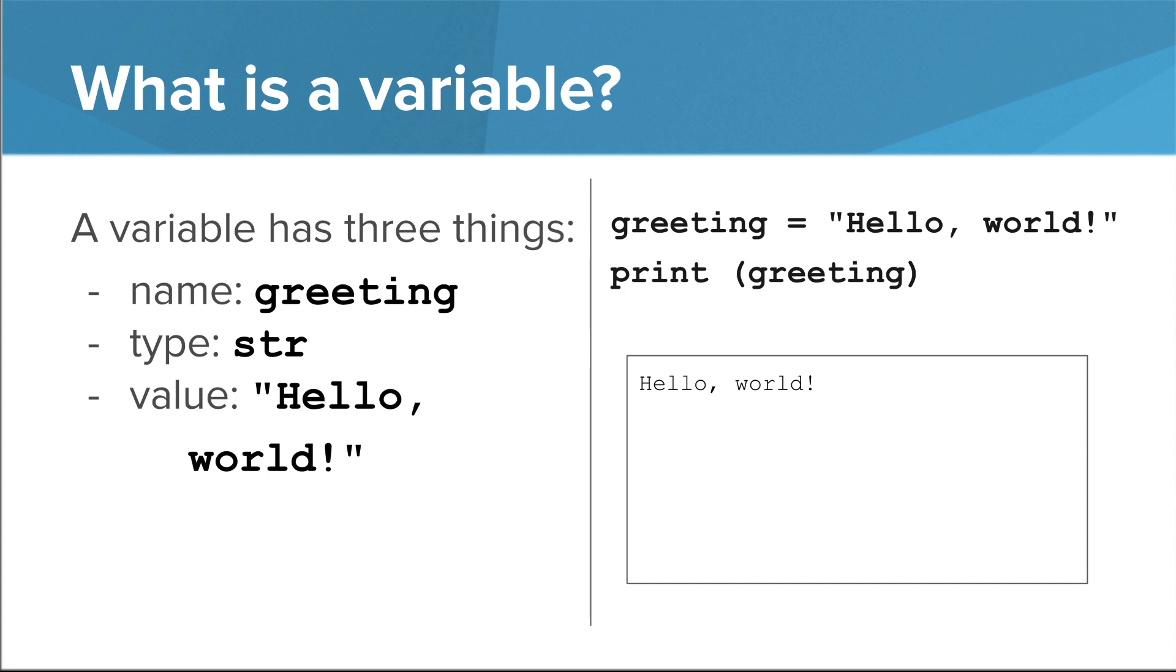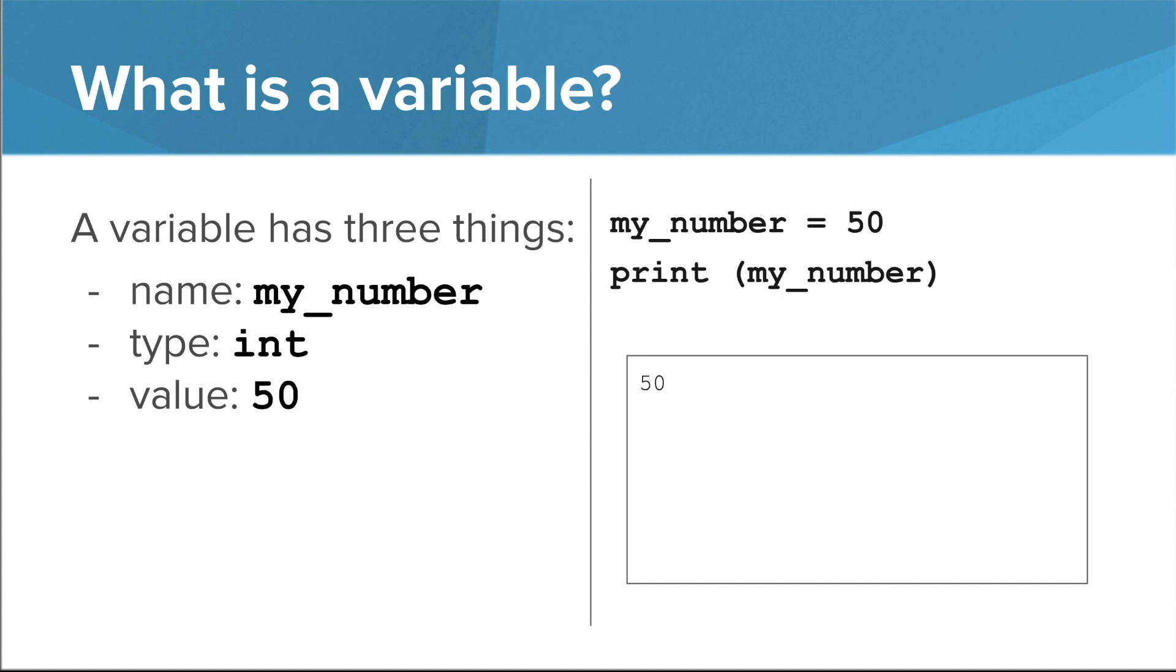Note that when you print the variable greeting, you don't put quotes around it. Then we saw a variable whose name was my number, whose type was int, which I'll also explain in a second, and whose value was 50.